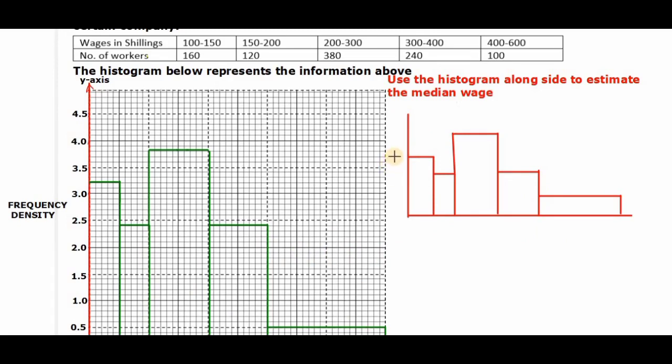So the height of the first bar is 3.2. The second bar is 2.4. The third one is 3.8. The fourth is 2.4, and the fifth bar is 0.5. And then we have the width.